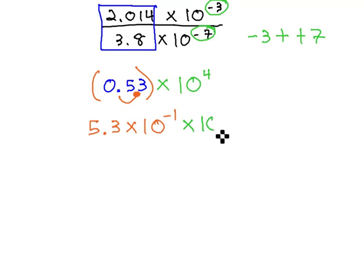Don't forget, we still have the times 10 to the 4th on there, and we can combine these together by adding our exponents. We now have 5.3 times 10 to the 3rd power.